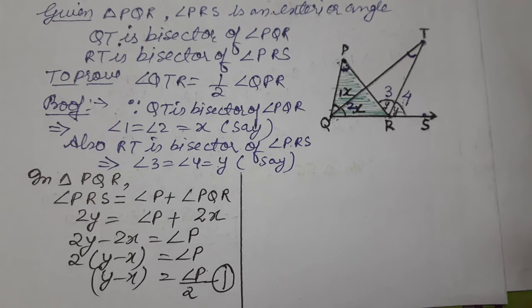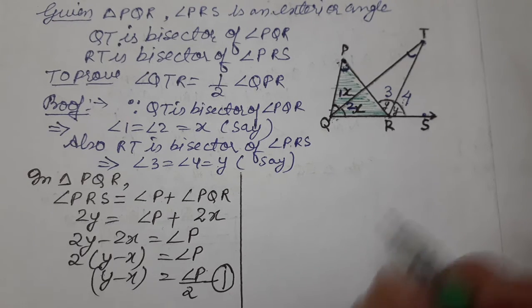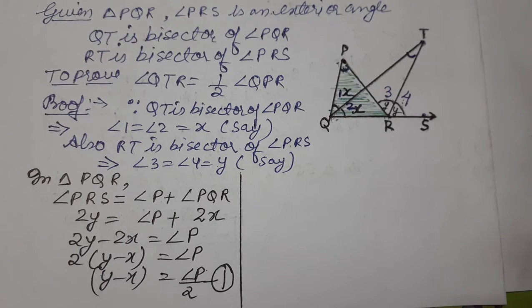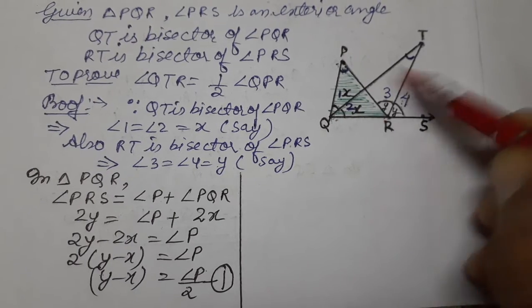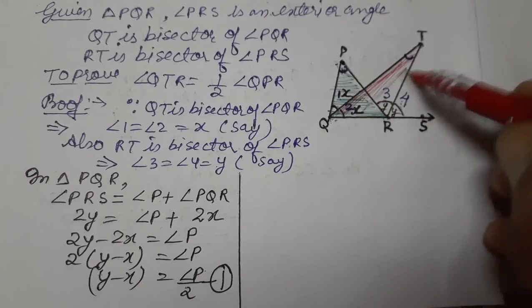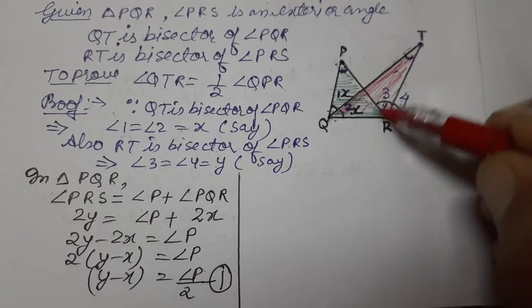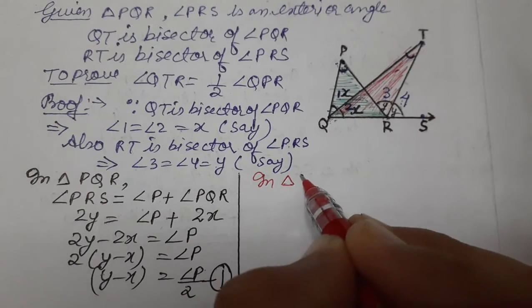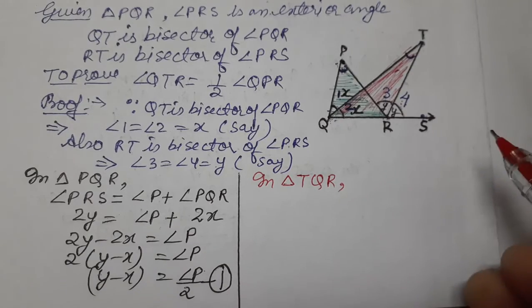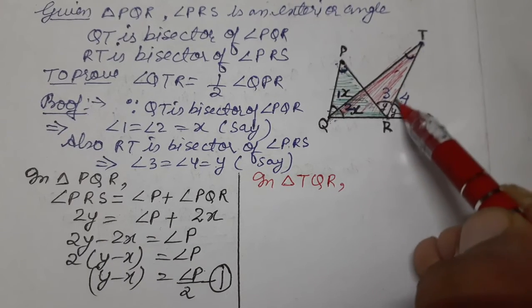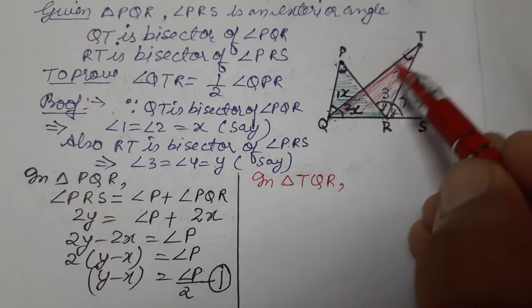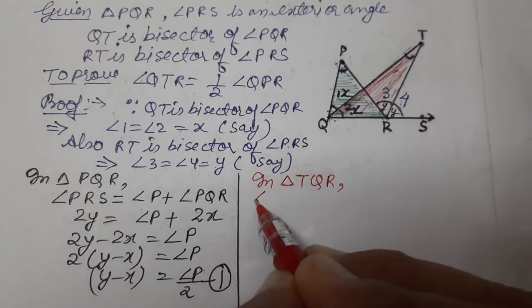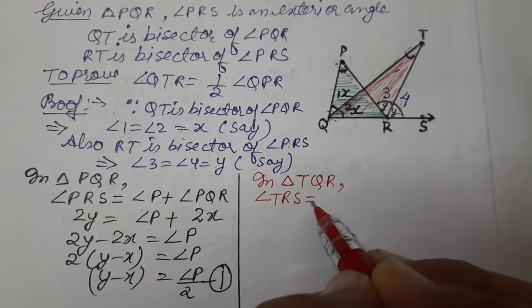Now we will consider another triangle. We have triangle TQR. In triangle TQR, TRS is the exterior angle.